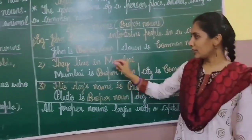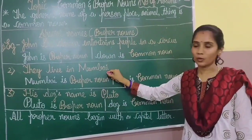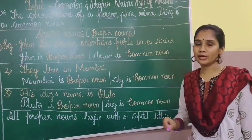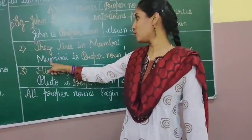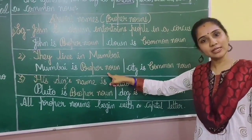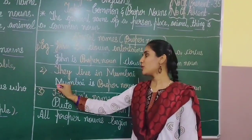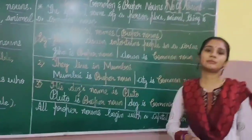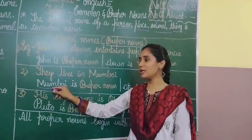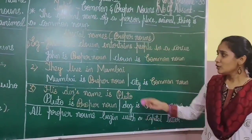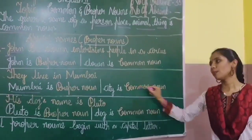Next example: 'They live in Mumbai.' Mumbai is a proper noun — it is the name of a city. City is a common noun. Whenever you use a proper noun, the letter begins with a capital letter.